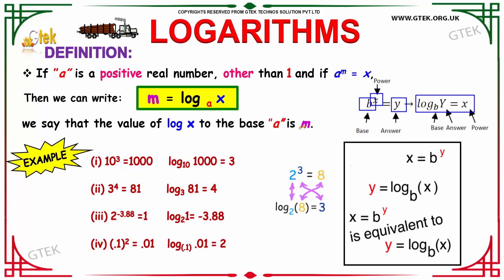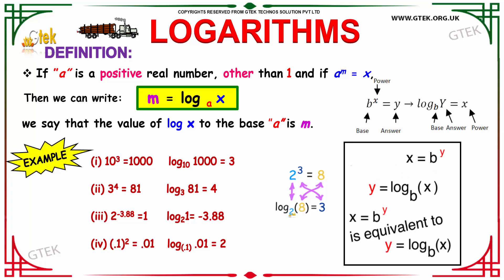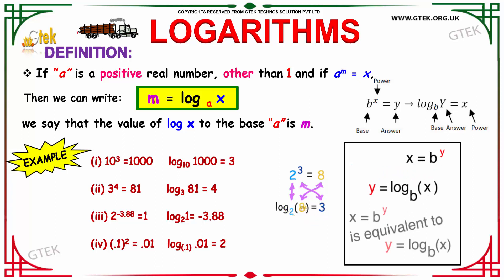This can be explained in simple terms. 2 to the power 3 is equal to 8. In logarithmic form, log 8 to the base 2 is equal to 3. That is, 2 should be raised to the power 3 to get your answer as 8.